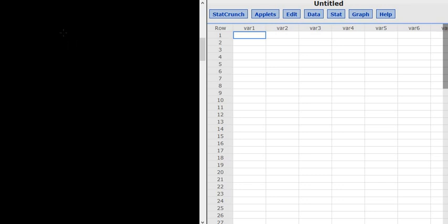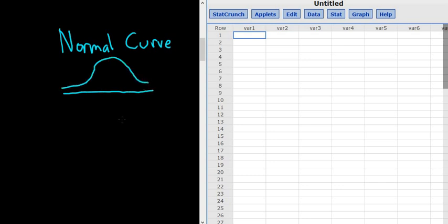In this video we're going to look at the normal distribution and how to compute probabilities in StatCrunch. So first there's something called the normal curve. And the normal curve looks like this. So people often say it's bell-shaped.